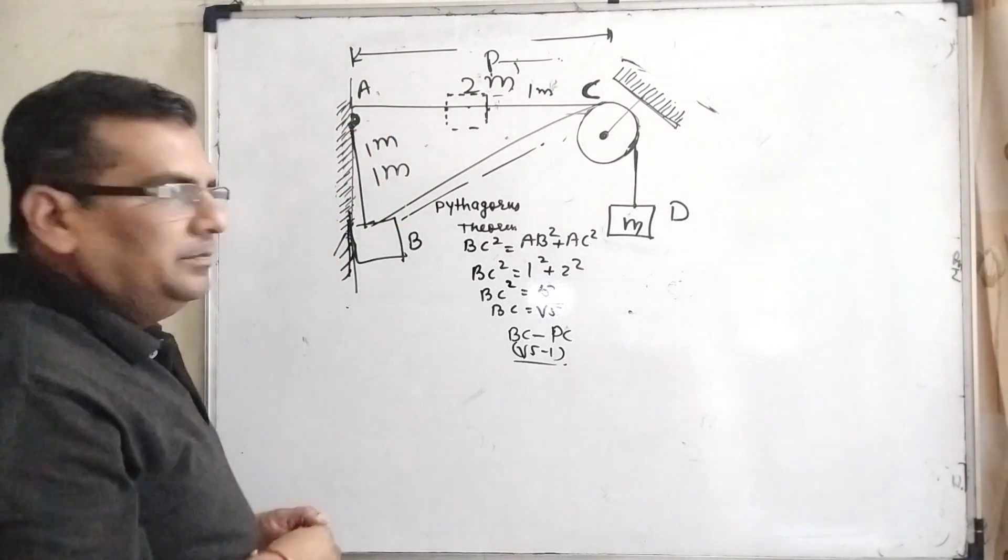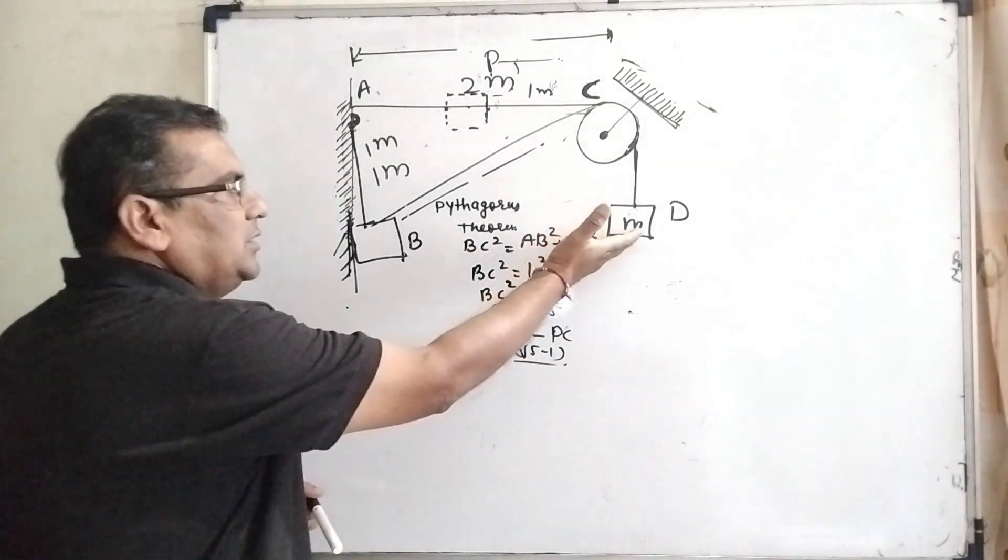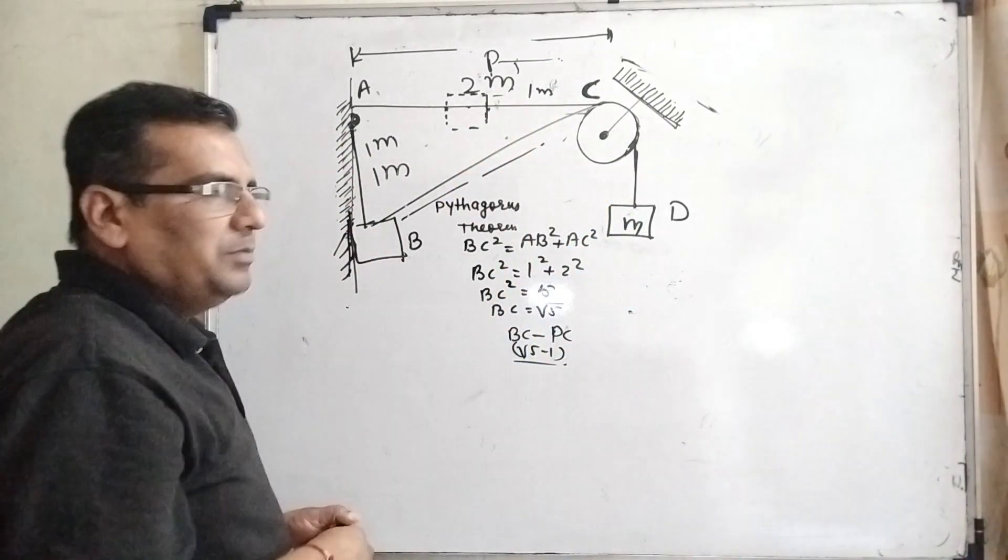After releasing this block, it loosens, then strikes the wall, and this small block goes upside.